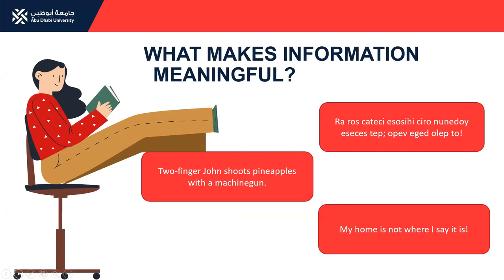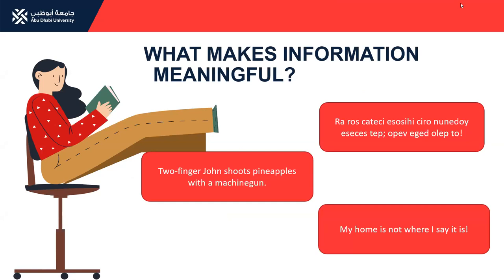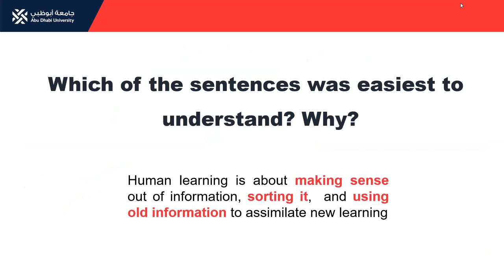What makes information meaningful? Here are three sentences that you should go through. Which of these sentences was easiest to understand? Was it sentence one, sentence two, or the third one?